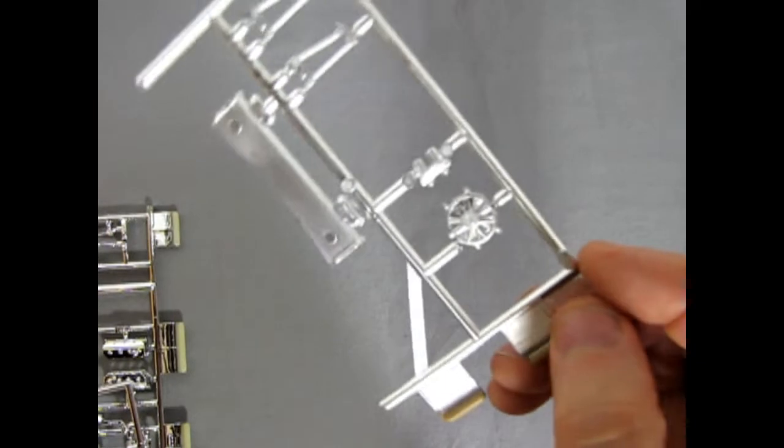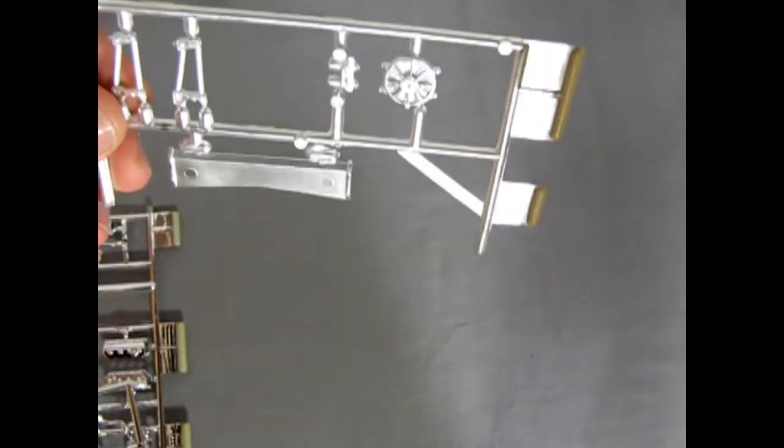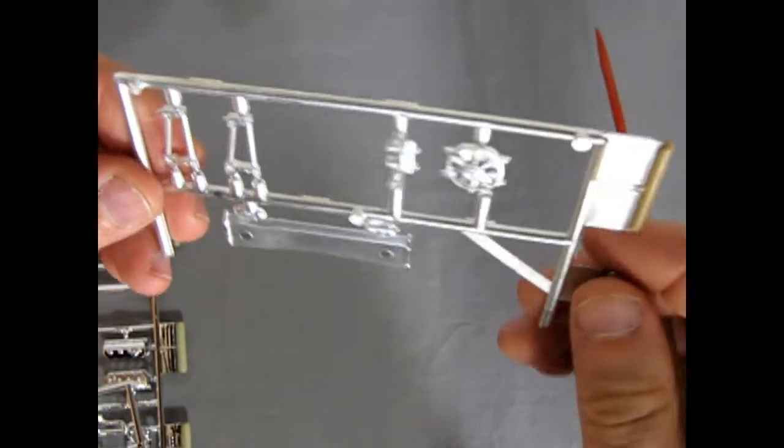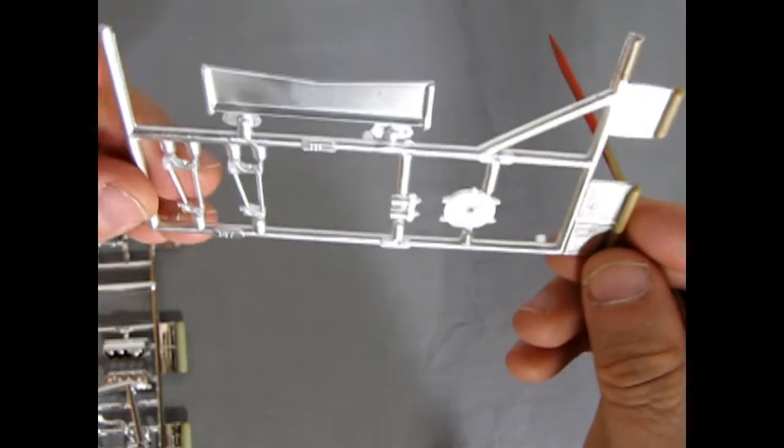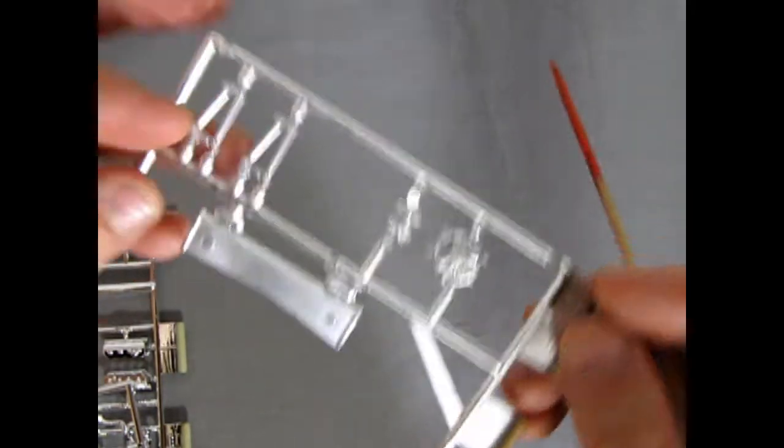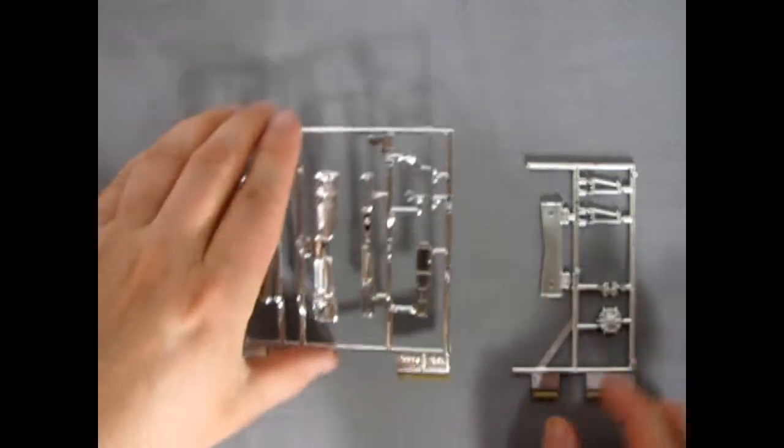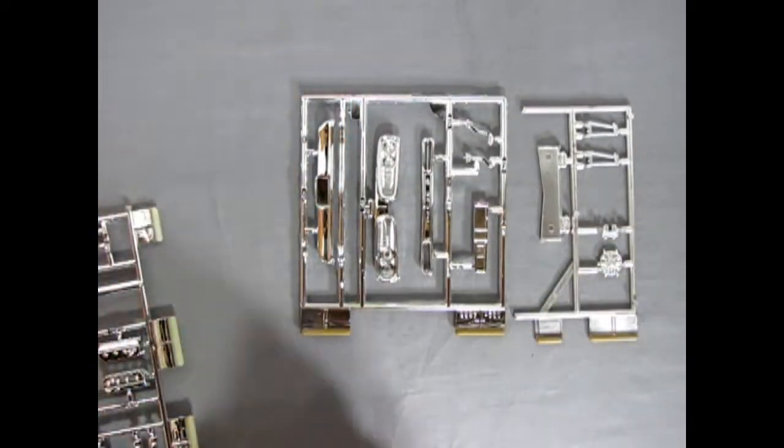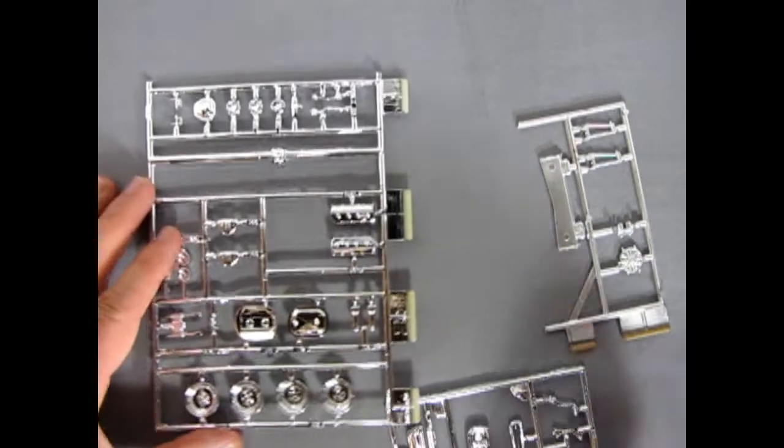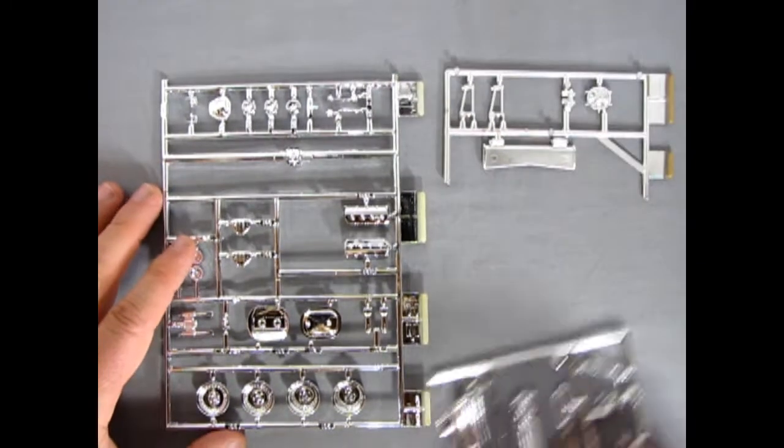And then there's the aluminum. So you can see the fan there and all the little components. The remainders of our components. Okay. So let's just tag this all back together here. And then we'll get a move on.